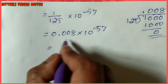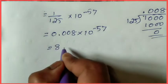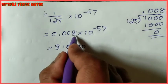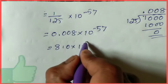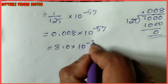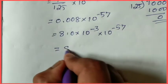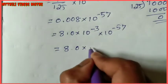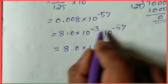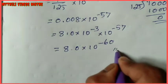Converting to scientific notation: 0.008 becomes 8.0 into 10 power minus 3, since there are 3 digits after the decimal. So 8.0 into 10 power minus 3 into 10 power minus 57. Since bases are equal, add powers: minus 3 plus minus 57 equals minus 60. The answer is 8.0 into 10 power minus 60.